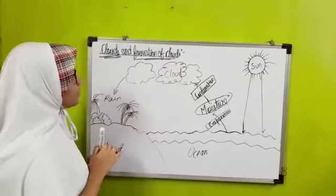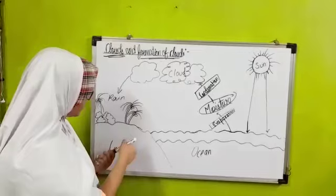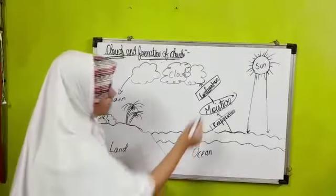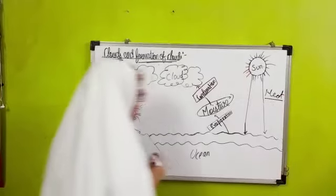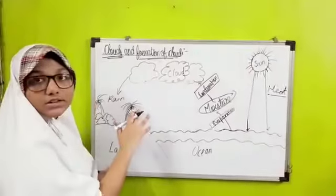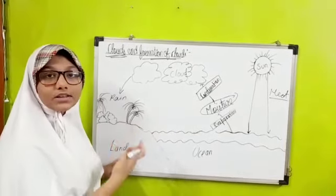The process is: the land and water get heated by the heat from the sun. Air near the surface gets heated up, rises, and becomes less dense. Hot air rises up.